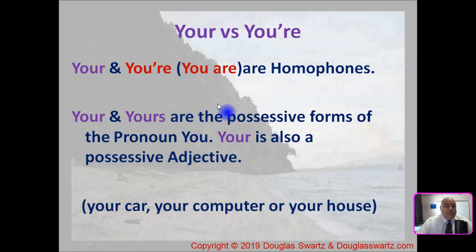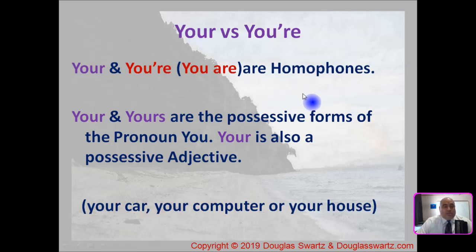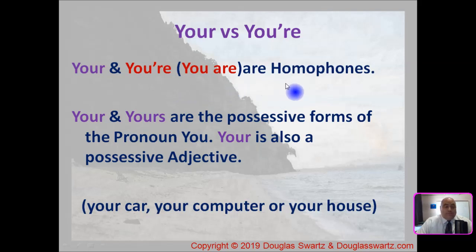Your and you're are homophones. They sound alike, and this is what leads to a lot of the confusion. Y-O-U-R-E is the contraction of you are. So your and you're sound alike, but they really mean your and you are.